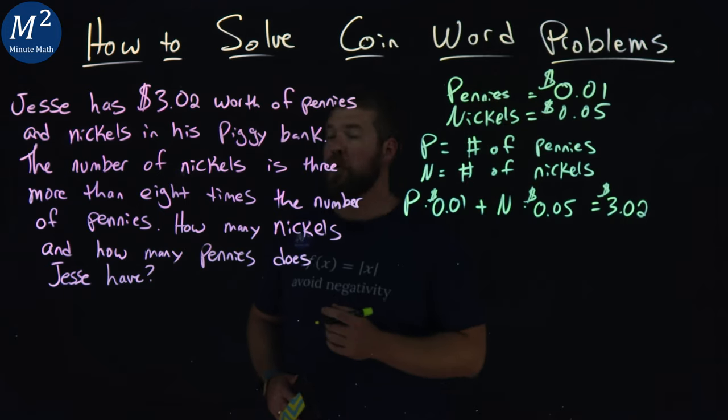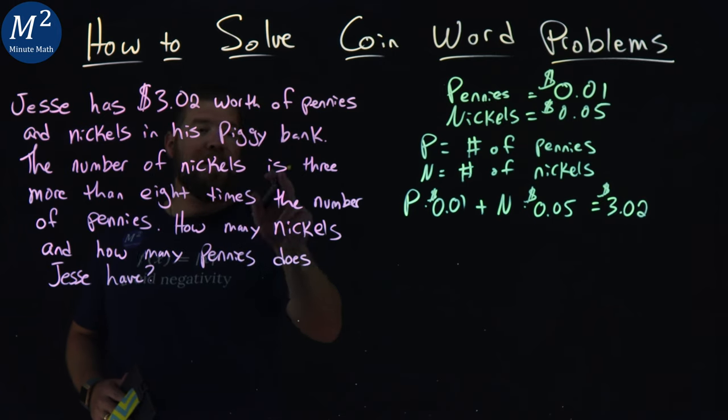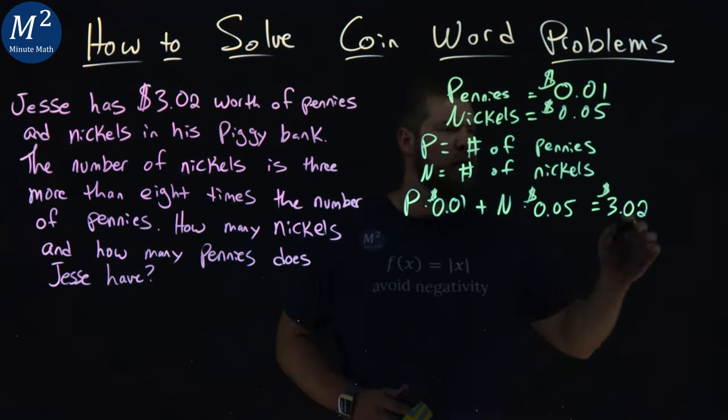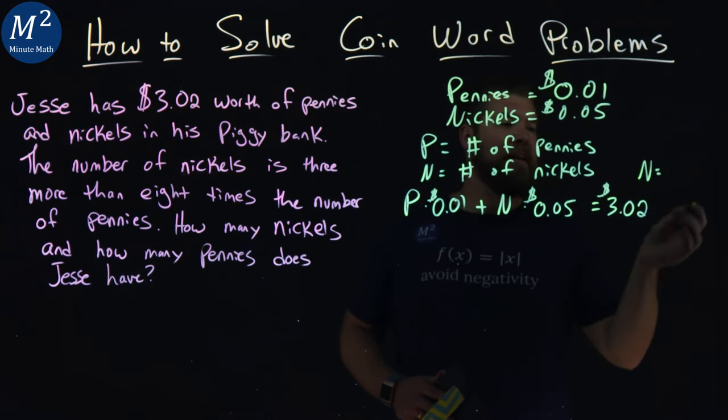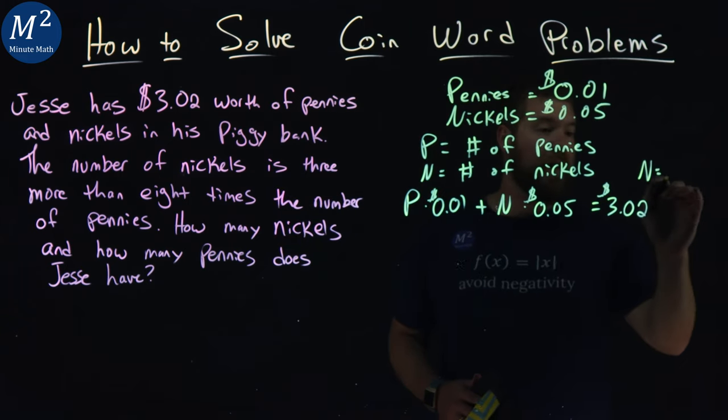But they give us another clue here. The number of nickels is three more than eight times the number of pennies. So n equals three more than eight times the number of pennies.